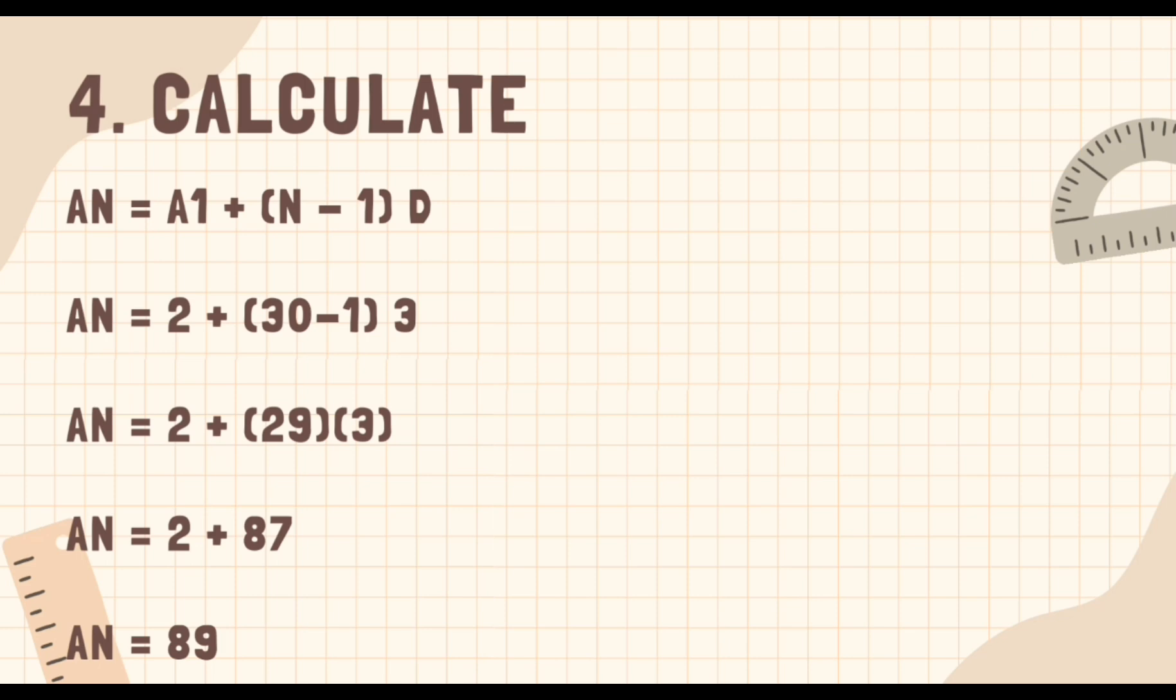Paano naging 87? Pinag-multiply natin ang 29 sa 3. And 29 times 3 is equals 87. Paano naging 89? Pinag-add lang natin ang 2 at 87. And 2 plus 87 is equals 89.